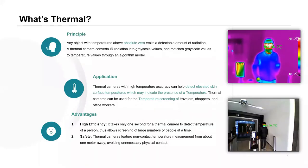Any object with temperatures above absolute zero emits a detectable amount of radiation. A thermal camera converts IR radiation into grayscale values and matches those values to temperature values through an algorithm model. We've put a more advanced chipset within the camera housing and reduced the temperature range to 30 to 45 degrees, allowing us to achieve an accuracy of plus or minus 0.5 degrees.